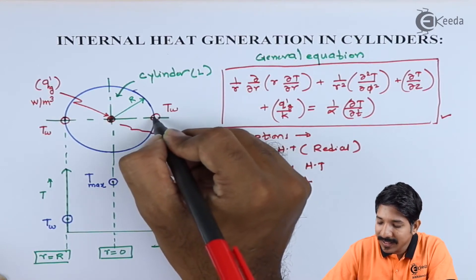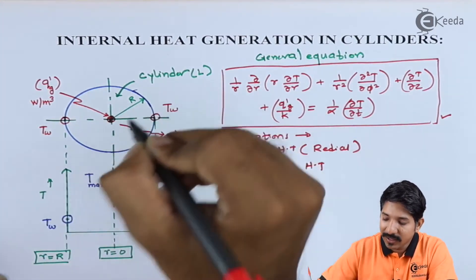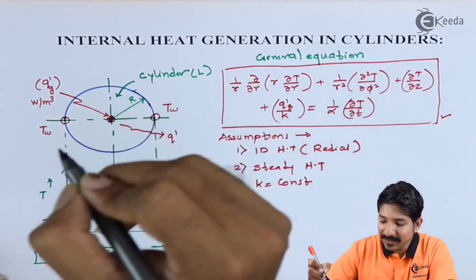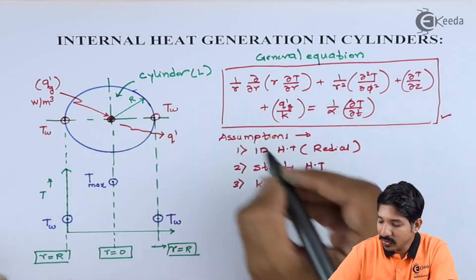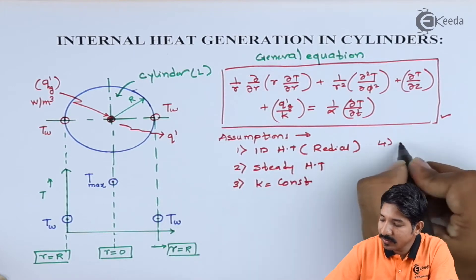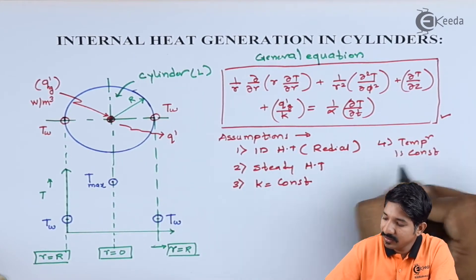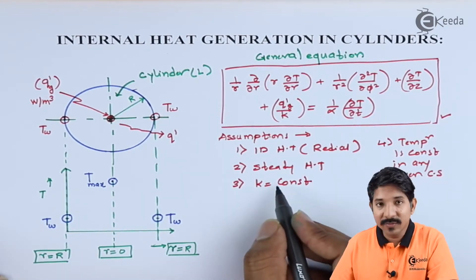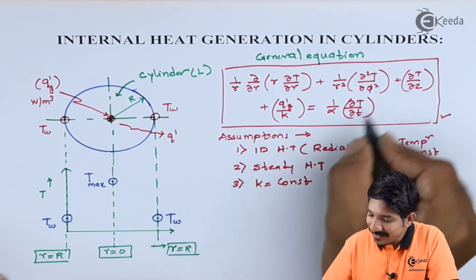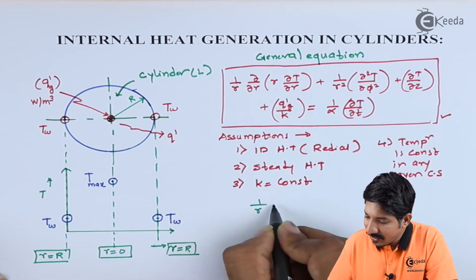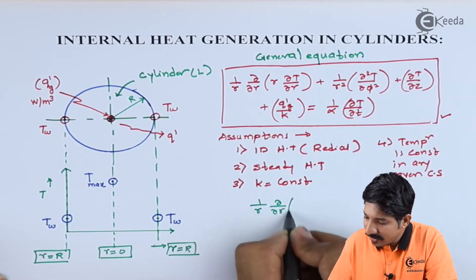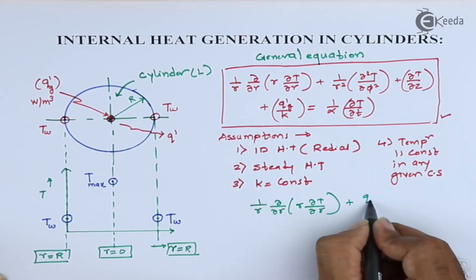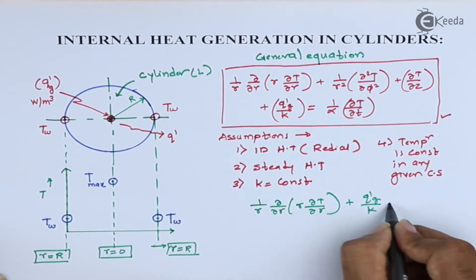One more thing to consider: if the temperature at the wall is T_W, then at any given cross-section at any given length the value is always T_W. So temperature is constant in any given cross-section. With these assumptions, I can simplify this equation as: (1/r) ∂/∂r (r ∂T/∂r) + Q'_G / K = 0.